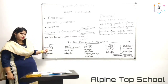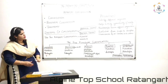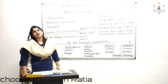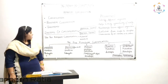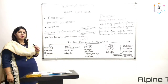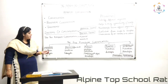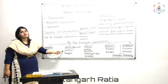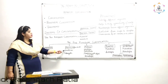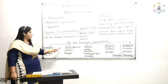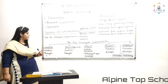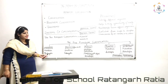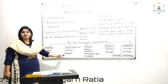The five kingdoms are: first, Monera; second, Protista; third, Fungi; fourth, Plantae; and fifth, Animalia. Monera consists of unicellular organisms, and Protista also consists of unicellular organisms. The difference is that Monera consists of prokaryotic cells, while Protista consists of eukaryotic cells.